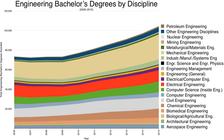In Slovakia, an engineer is considered to be a person holding a master's degree in technical sciences or economics. Several technical and economic universities offer four- to five-year master's study in fields such as chemistry, agriculture, material technology, computer science, electrical and mechanical engineering, nuclear physics and technology, or economics. A bachelor's degree in a similar field is a prerequisite. Graduates are awarded the 'Ing.' title, placed in front of their name. Follow-up doctoral study is offered by universities and institutes of the Slovak Academy of Sciences.